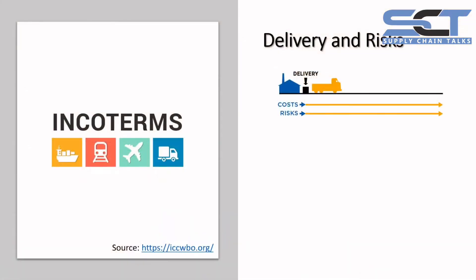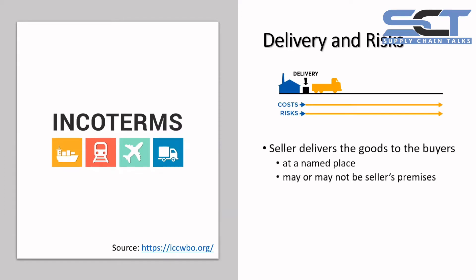Let's start with the basics of Incoterms. The first topic we are going to discuss is about delivery and risk. EXW basically means that the seller delivers the goods to the buyer when the seller places the goods at the disposal of the buyer at a named place, like a factory or warehouse. The named place needs to be mentioned clearly in the Incoterms.